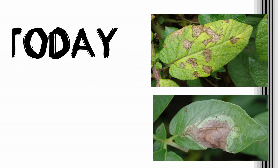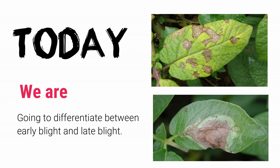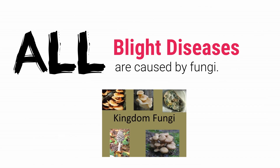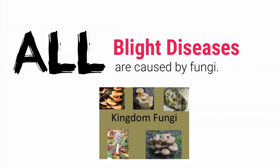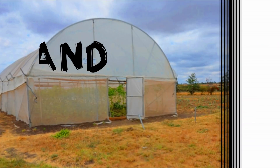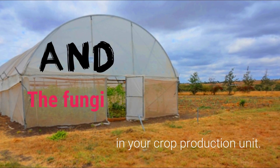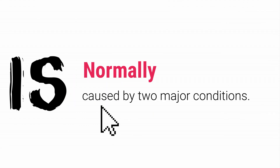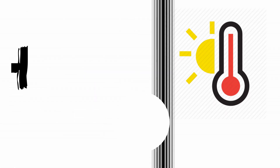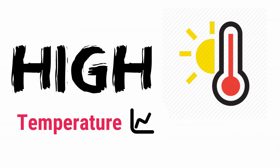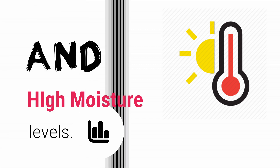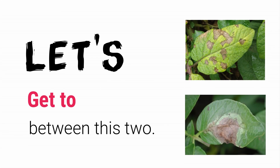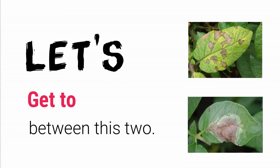Hi there, today we are going to differentiate between early blight and late blight. All blight diseases are caused by fungi, and the fungi in your crop production unit is normally caused by two major conditions: high temperatures and high moisture levels. Let's get to the differences between these two.